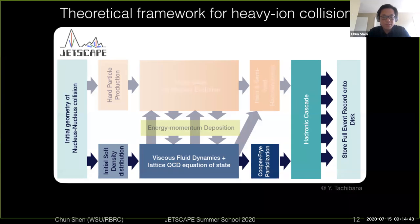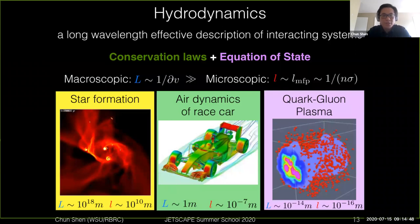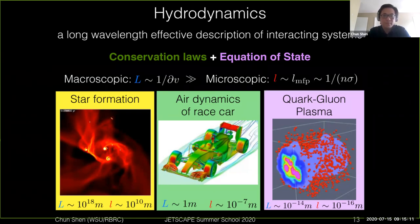In this simulation of the bulk dynamics, the main tool we will use is called hydrodynamics. You can view it as a long wavelength effective theory to describe strongly interacting systems. It relies on two basic ingredients: the conservation of energy and momentum, and also needs to be solved together with a given equation of state to describe what is the underlying matter in the system you want to simulate.